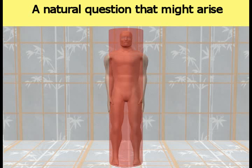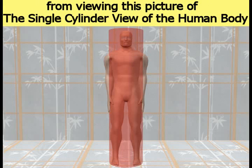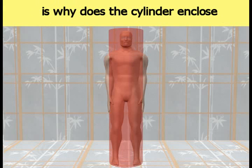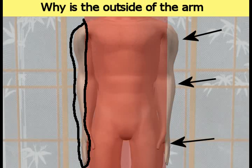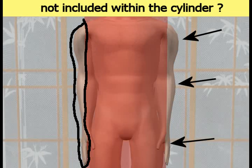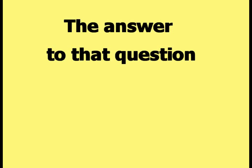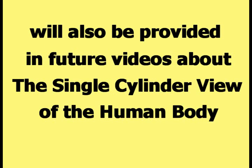A natural question that might arise from viewing this picture of the single cylinder view of the human body is: why does the cylinder enclose only the inside of the arm? The answer to that question will also be provided in future videos about the single cylinder view of the human body.